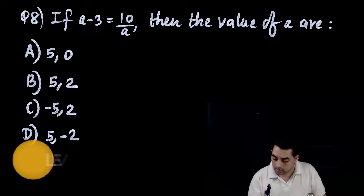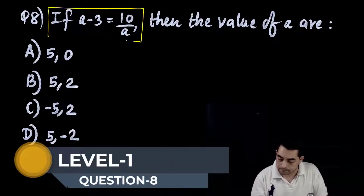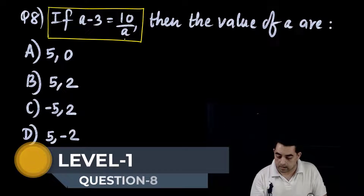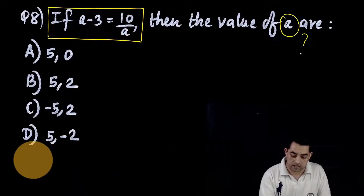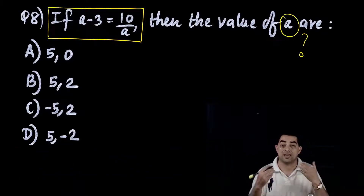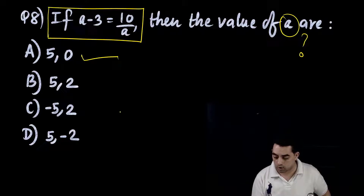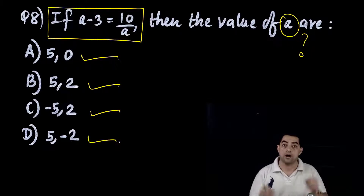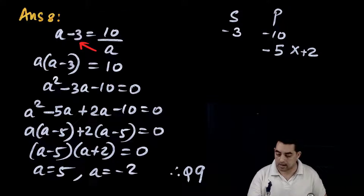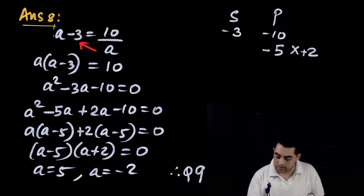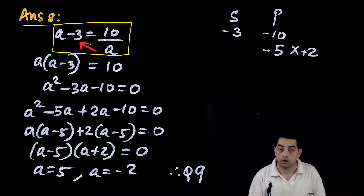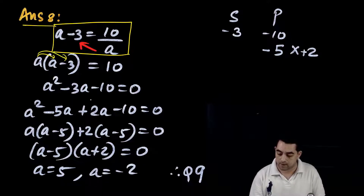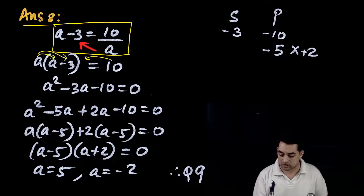Question number 8: if a - 3 = 10/a, find the value of a. Options: (5,0), (5,2), (-5,2), (5,-2). Cross multiplying: a(a-3) = 10 → a² - 3a - 10 = 0. Sum = -3, product = -10; factors are -5 and +2. Factorizing: (a-5)(a+2) = 0, giving a = 5 and a = -2. Correct answer: option D.